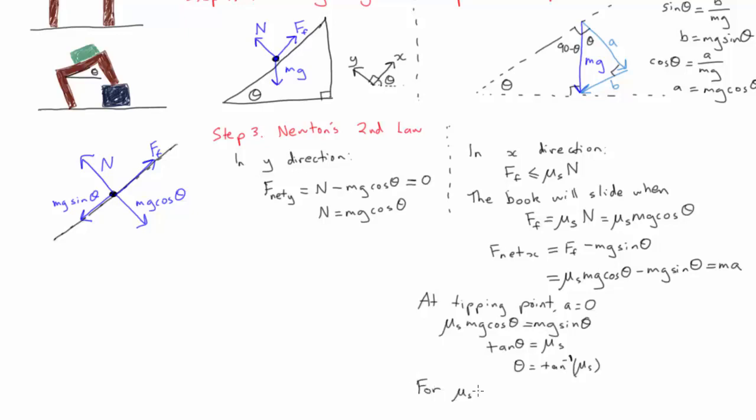Now depending what materials the book and the table are made from we might have a static friction coefficient of around 0.40 which would give us a tipping angle of about 22 degrees.